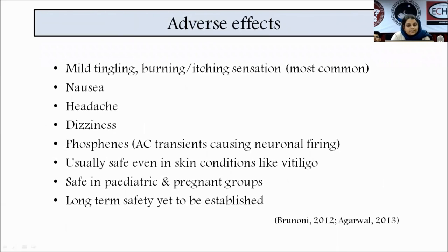Commonly reported adverse effects are mild tingling, burning, and itching sensation. Nausea is usually reported when the electrode is placed over the mastoid area due to close approximation with the vestibular apparatus. Headache, dizziness, and phosphenes — transient flashes of light — are commonly reported when the electrode is placed near the eyes. tDCS is usually safe even in skin conditions like vitiligo, and safe in pediatric and pregnant groups, however long-term safety has yet to be established.